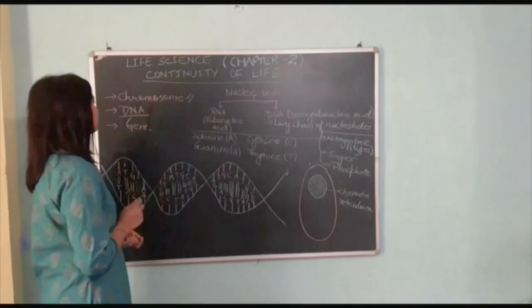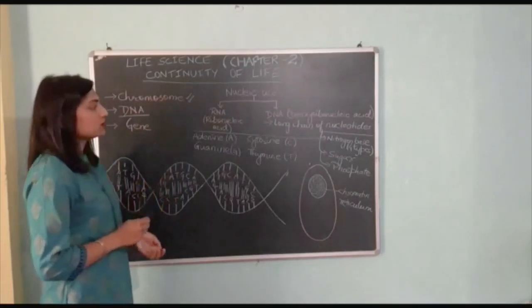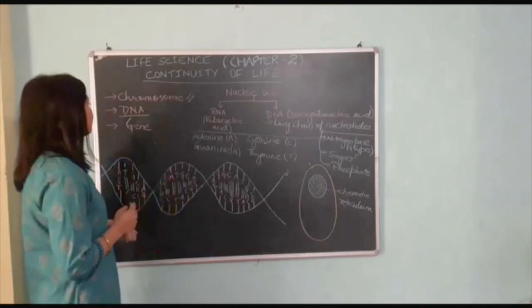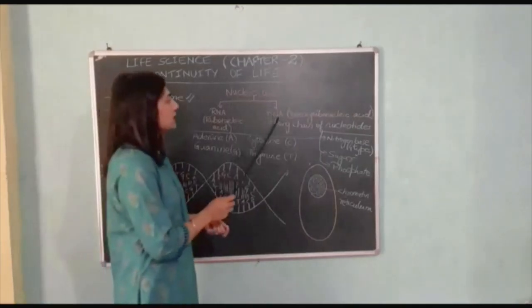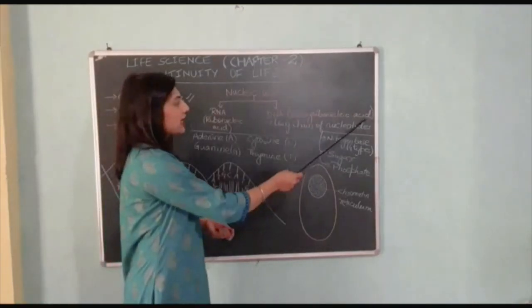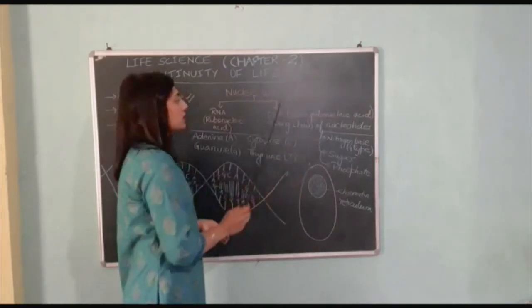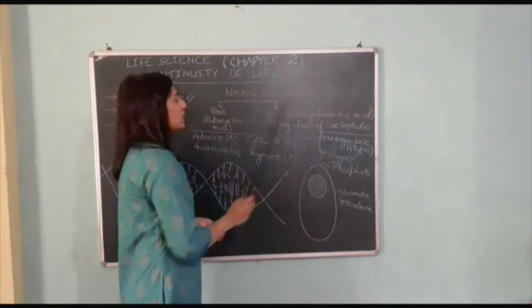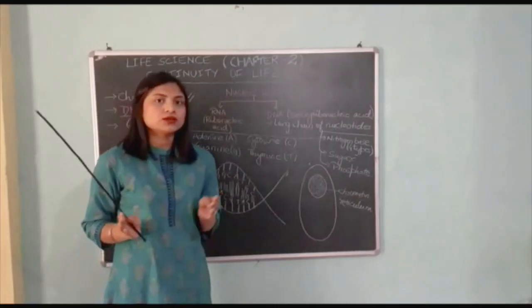Before starting with the chapter we need to go through some words: chromosomes, DNA, genes. We need to study these before starting this topic. DNA - deoxyribonucleic acid. The full form of DNA is deoxyribonucleic acid and it is a long chain of nucleotides.